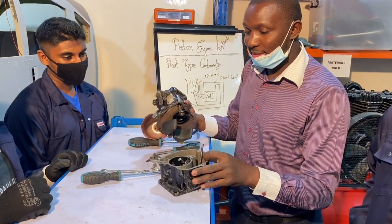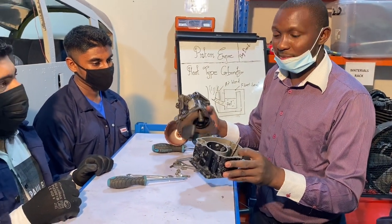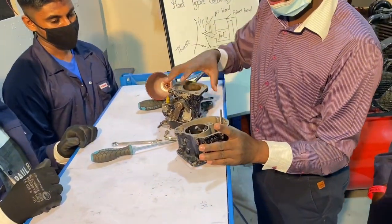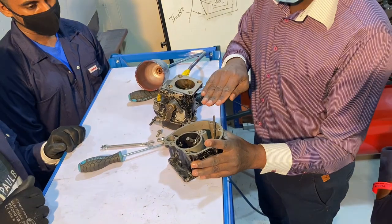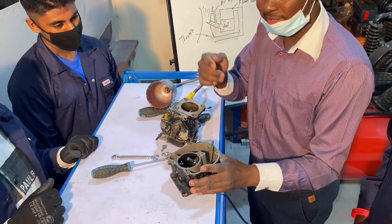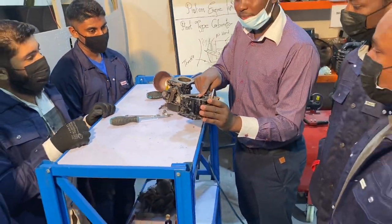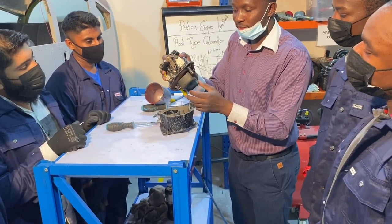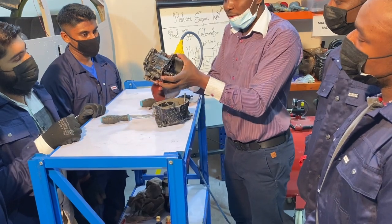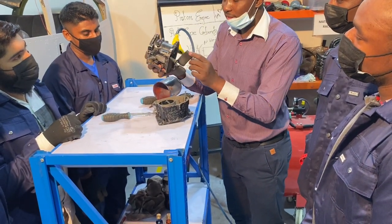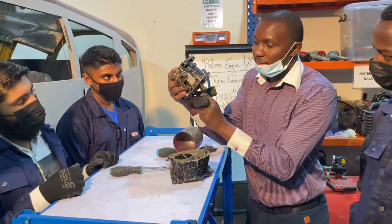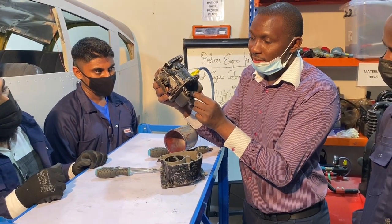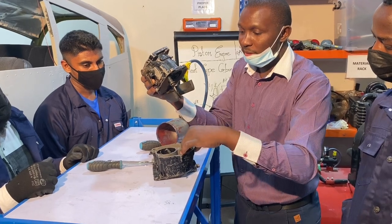Let's look at the parts of this float-type carburetor. We have the valve — this is where the fuel comes in and is kept for some time before it's atomized and metered through the main metering jet. It has a float. This float sits on the valve, so once the fuel comes in, the float through the needle pin will block flow. Then when fuel reduces, it opens and fuel comes back to the valve.